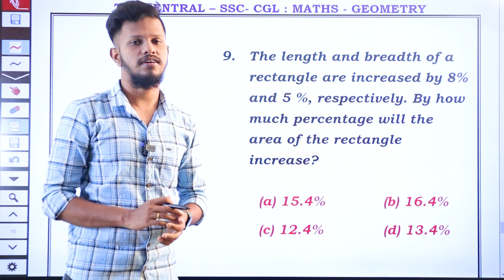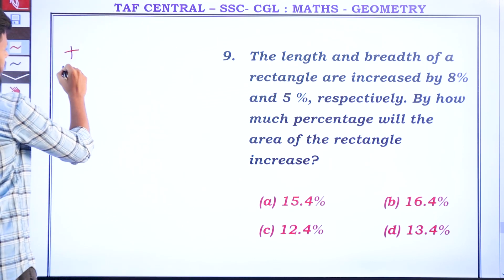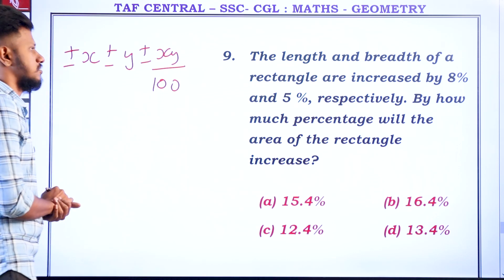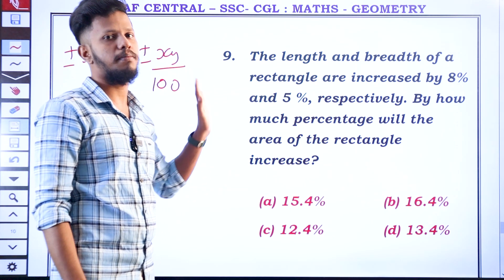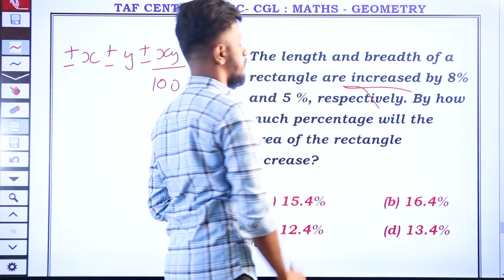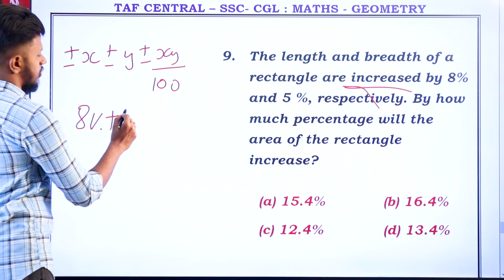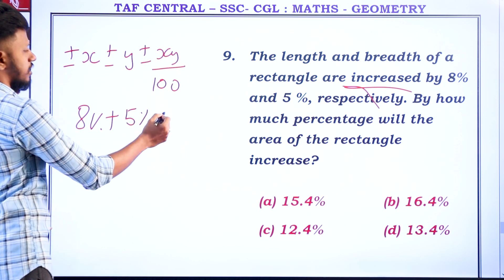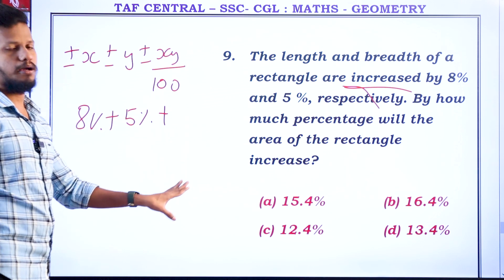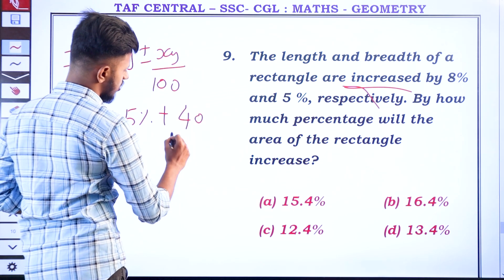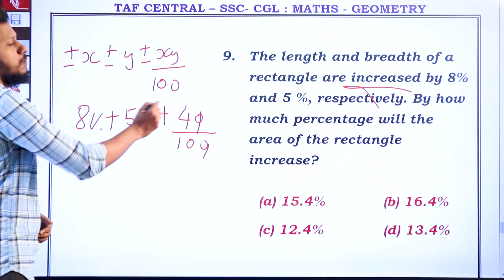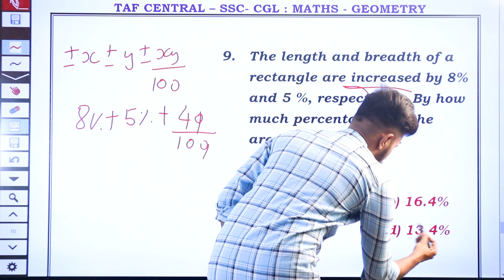I will tell you a formula. What do you think? Plus or minus x, plus or minus y, plus or minus xy divided by 100. If you increase, you get plus; if you decrease, you get minus. If you increase both, plus x plus y equals plus. After this, it is 0.4 and then the length is 13 plus 0.4 — option D is the answer.